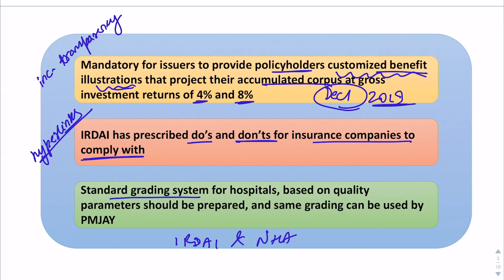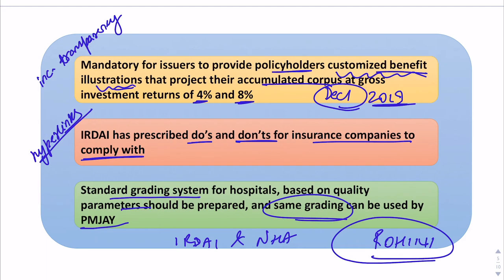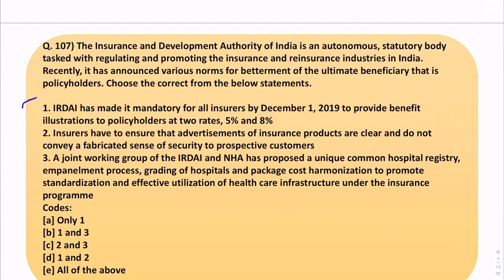A standard grading system for hospitals based on quality parameters should be prepared, and the same grading can be used by Pradhan Mantri Jan Arogya Yojana. The committee recommended a single unique hospital registration process, and that repository is known as ROHINI — Registry of Hospitals in Network of Insurance. This is beneficial as a central health facility repository number can be used for identification across various schemes. Since the correct rates are 4% and 8%, not 5% and 8%, the correct answer is option C — statements 2 and 3.